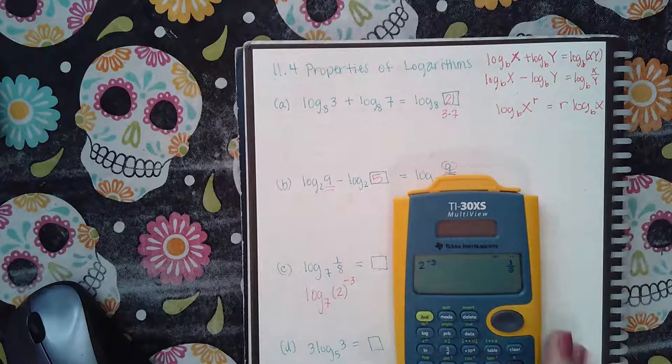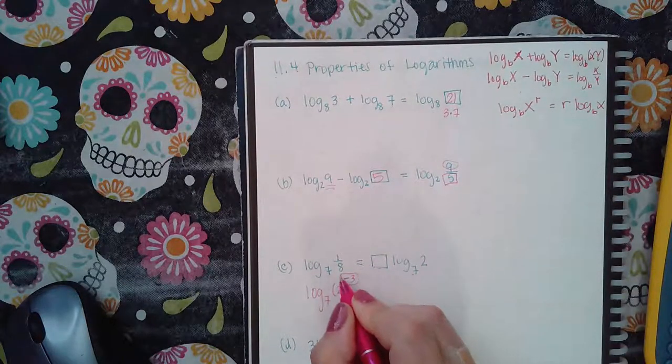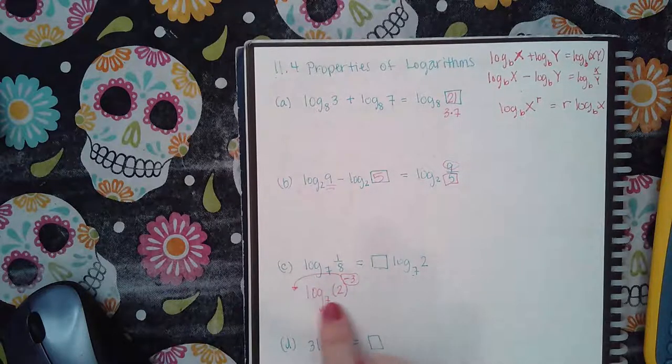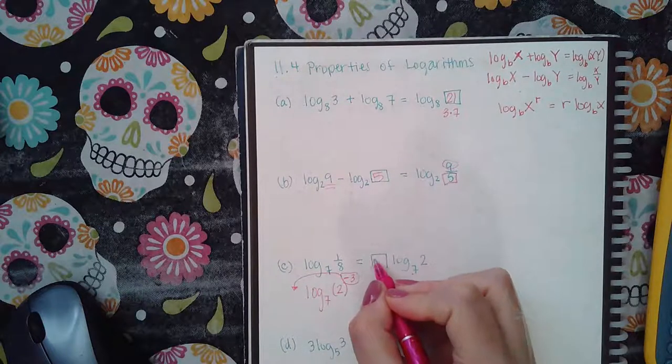So the rule is that this exponent will come to the front and end up being multiplied by this expression. Notice they already have this expression, they just want to know what was the exponent that came down, and that's what would go inside that box.